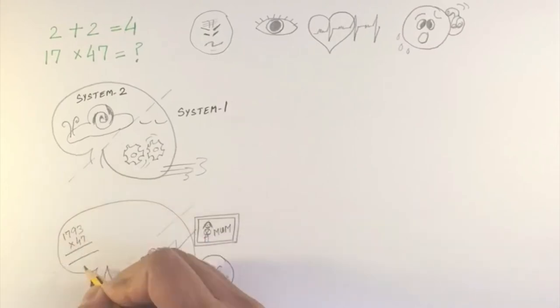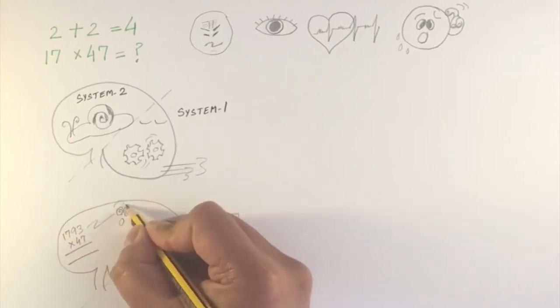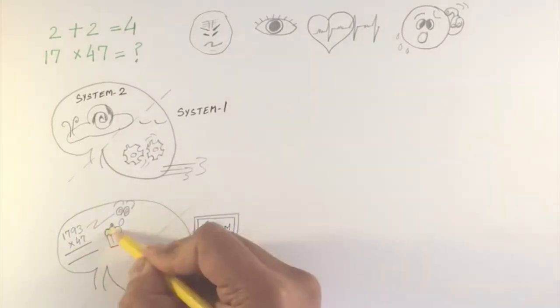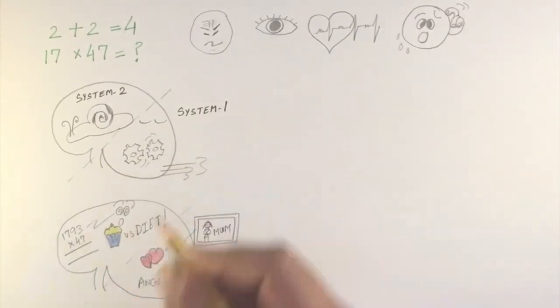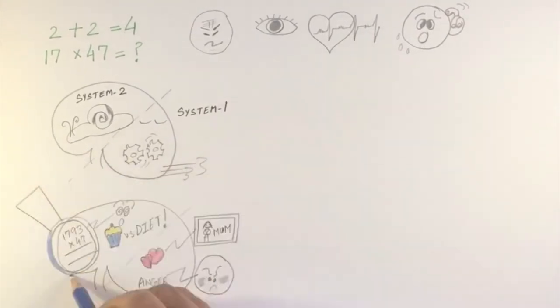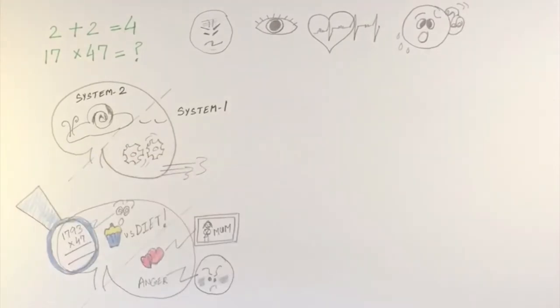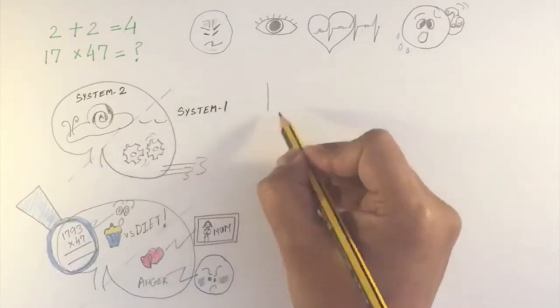System 2 performs two types of operations: complex computations and self-control, that is, the inhibition of impulses. When System 2 is on, you focus on the task at hand and your attention is fully devoted to it. These two systems guide your perception.